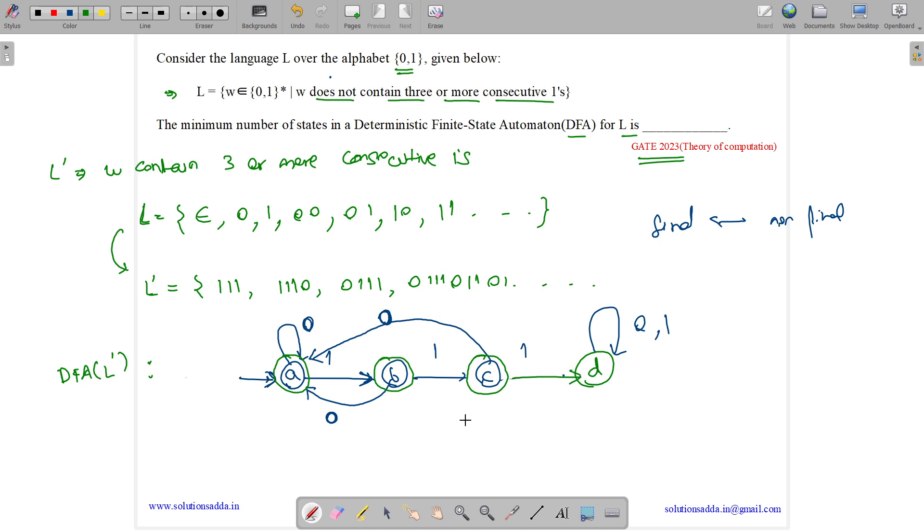This is our DFA. How many states are there? There are 4 states. And it is minimal. Since we designed it from the complement, it will be minimal. You can easily see that it is minimal. The answer is 4 states.